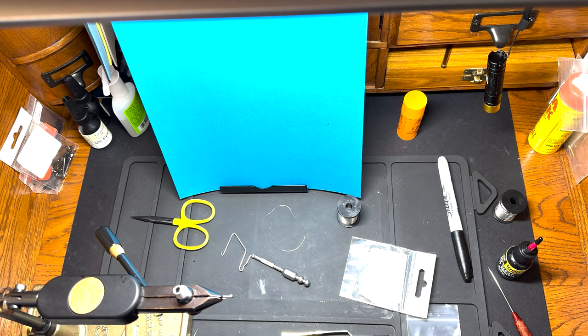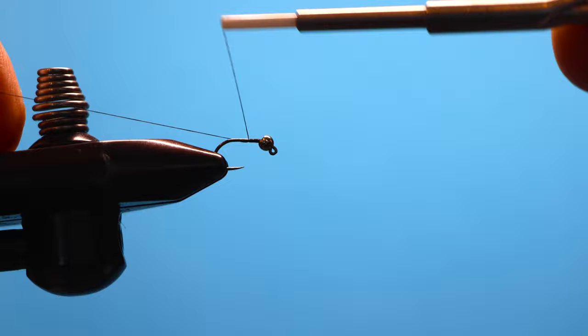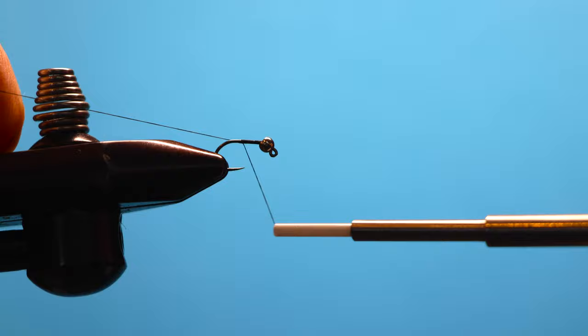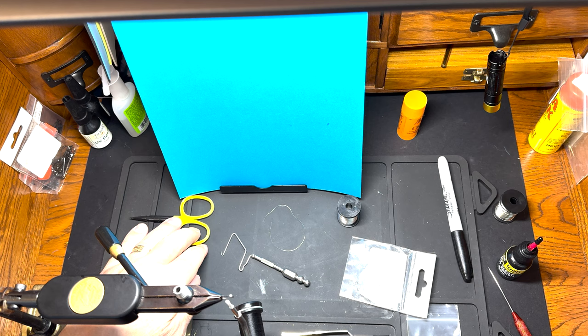We've got a number 18 J hook. We're just going to get the thread started, make pretty nice tight wraps all the way to the back. We'll get that bead in place at the end, so just trim that.